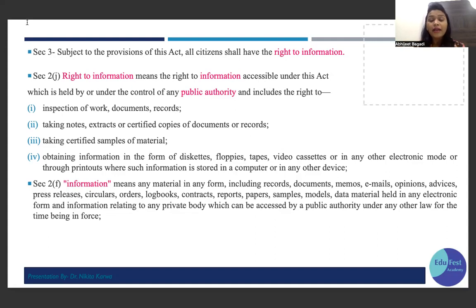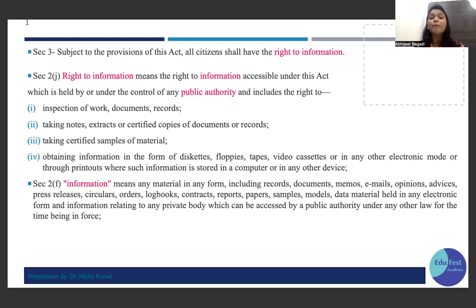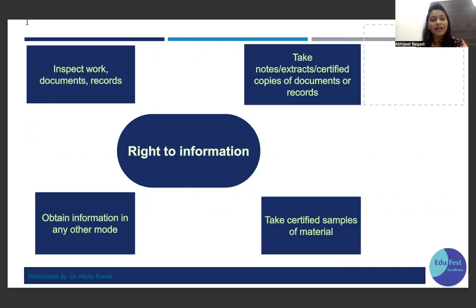Right to Information includes four individual rights: first, inspection of works, documents or records — whatever government records and documents exist, you can inspect them; second, taking certified copies or extracts; third, if the material is in physical form, you can take a sample; and fourth, if information is in the form of floppy, CD, tape, video cassette, or stored in a computer or other device, you can demand that information in electronic mode.